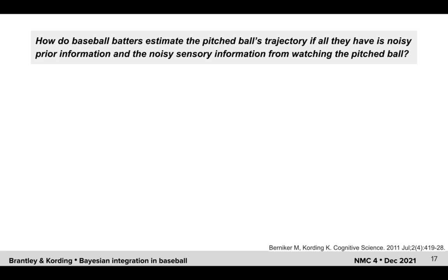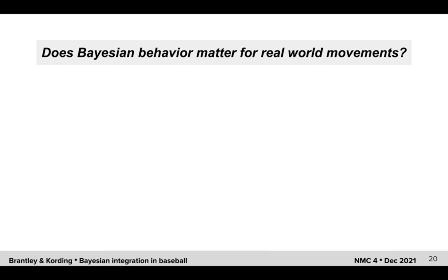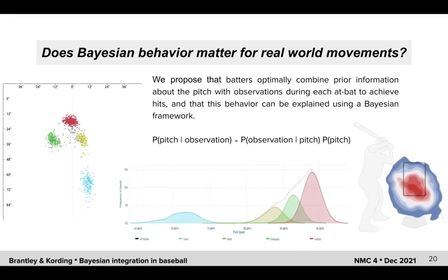Well, by using Bayes' rule, of course. Bayes' rule has been used extensively in the study of motor control and provides us with a framework for formalizing the problem of how we integrate varying sources of uncertainty with our prior knowledge about the world. However, the question remains: does Bayesian behavior matter for real-world movements? Here, we propose that batters optimally combine prior information about the pitch with observations during each at-bat to achieve hits, and that this behavior can be explained using a Bayesian framework.